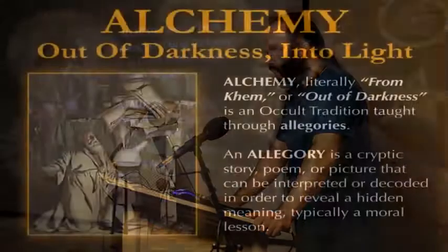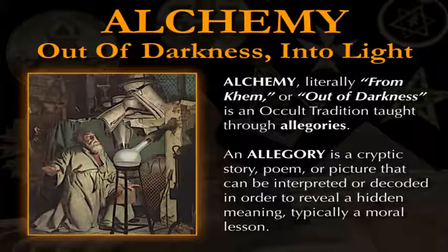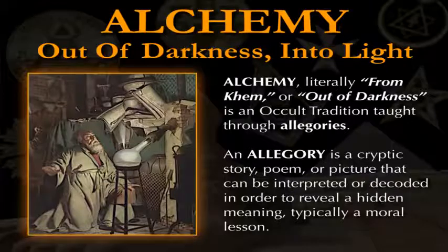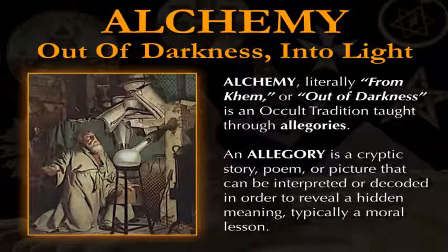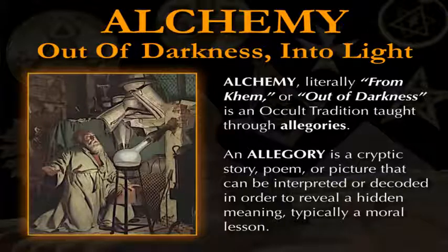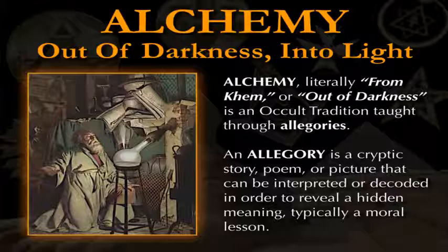I call this section Alchemy: Out of Darkness and Into Light. Alchemy literally means from Chem. Al is a prefix that means from or related to or out of, and Chem meant black in ancient Egyptian and was often the name used for Egypt. So it was from darkness, out of darkness.